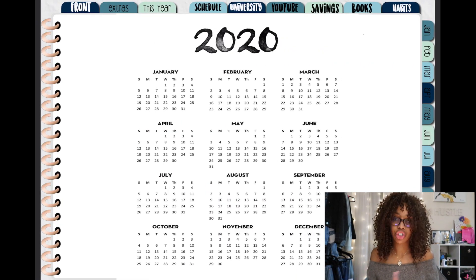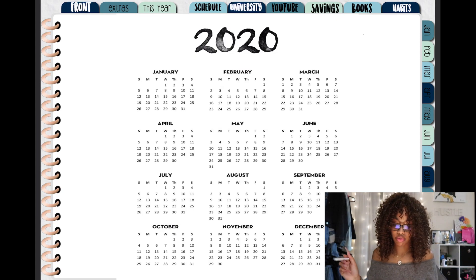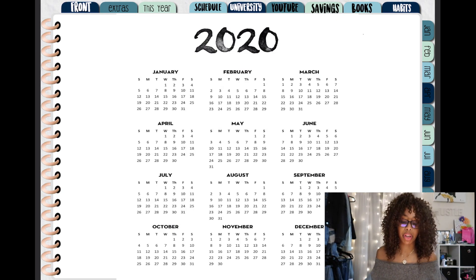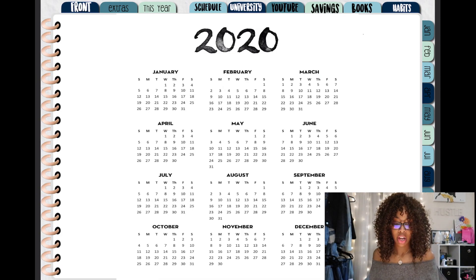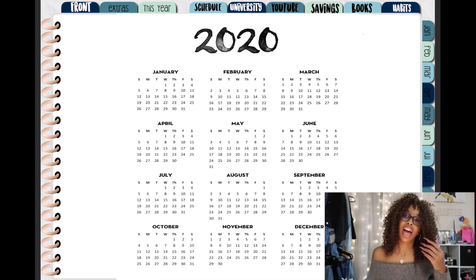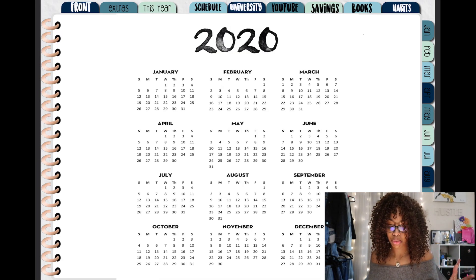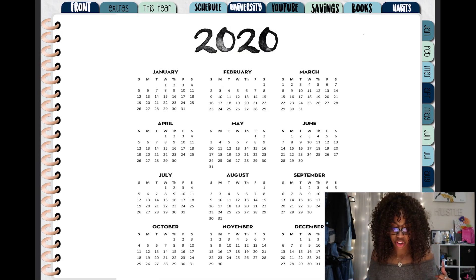This tab is just like an overview of the year 2020, having all of the months in there — January to December. It's something to look back at. I don't necessarily look at this too much but you know, throughout the year for reference.